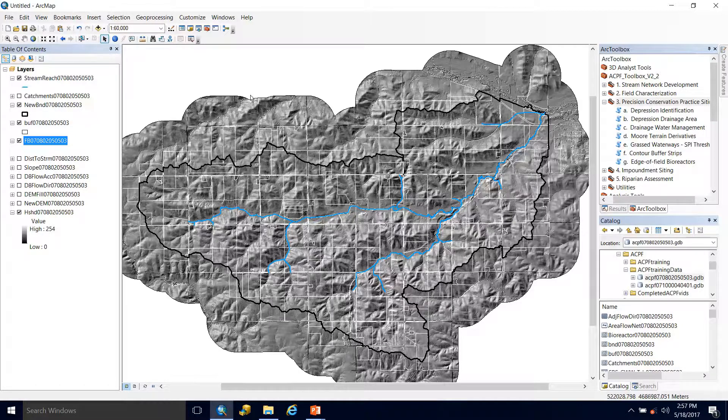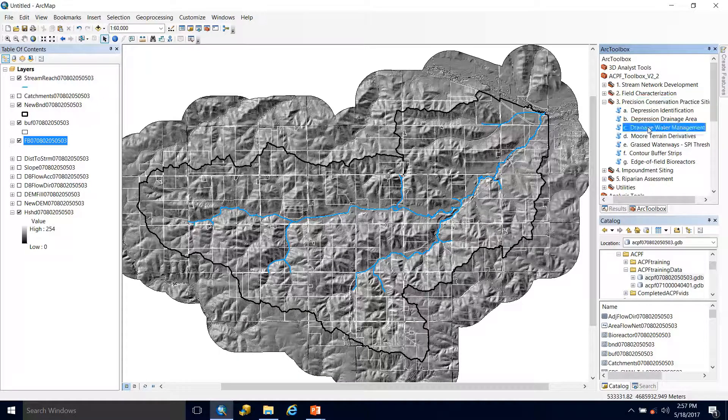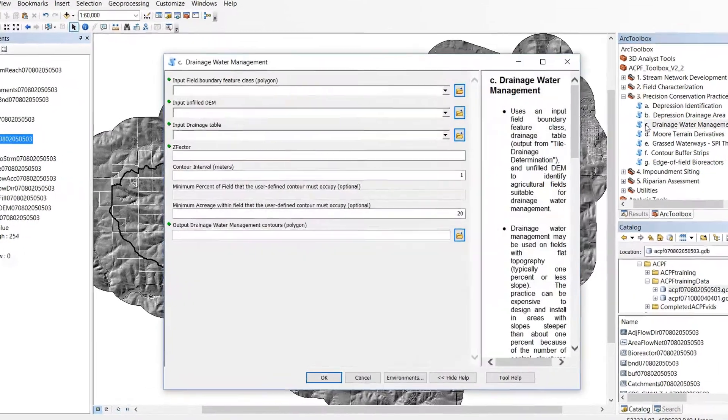All right, so we're back in our map document and let's run this tool. So we'll come over to this tool set, go down to drainage water management, open it up.